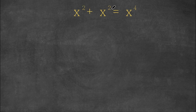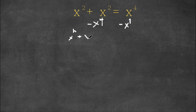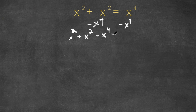So we have x squared plus x squared is equal to x to the power of 4. Now what I'm first going to do is I'm going to subtract x to the power of 4 on both sides. So now we have x squared plus x squared minus x to the power of 4 is equal to 0.